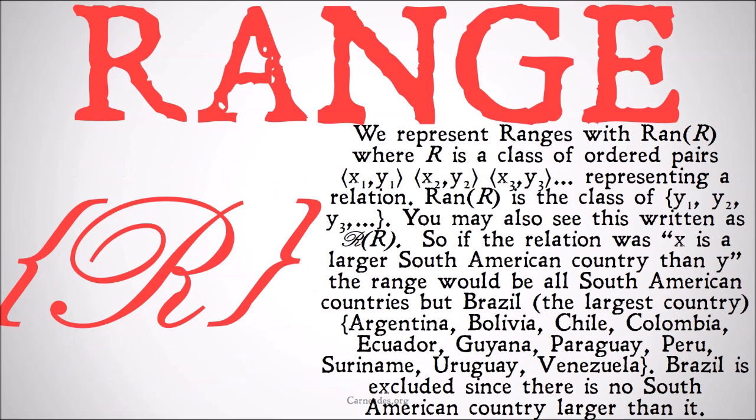We represent ranges with RAN R, where R is a class of ordered pairs (X1, Y1), (X2, Y2), (X3, Y3), etc., representing a relation. RAN R is the class of Y1, Y2, Y3, etc., where that includes all of the second members of the ordered pairs. You may also see this written as script R, R.